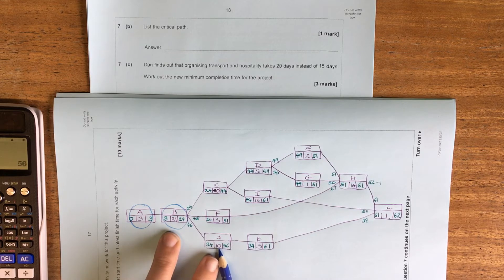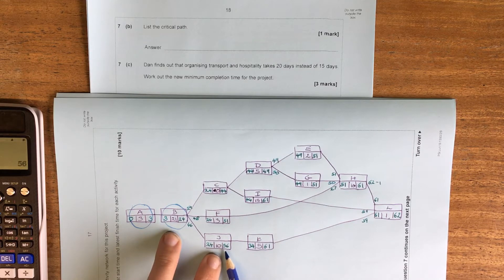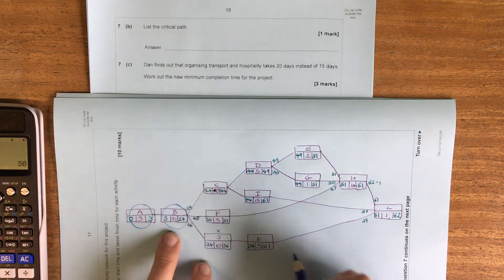This one, 24 and 10 is 34. So this could finish at 34 but doesn't need to finish till 56. So this one, not critical.